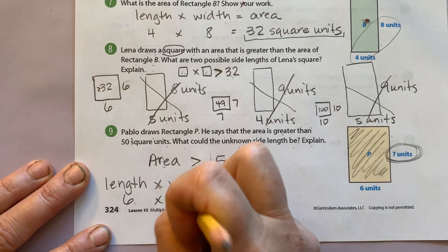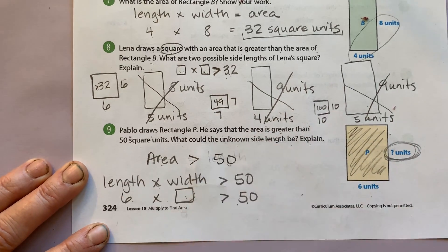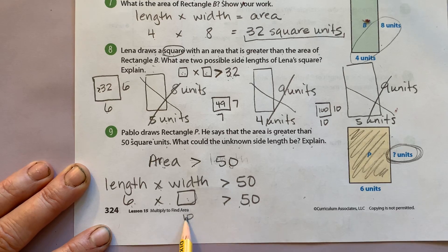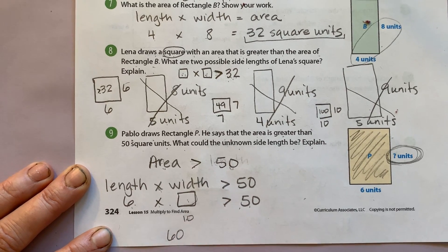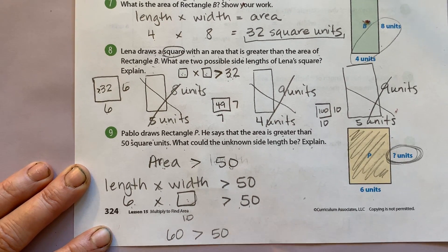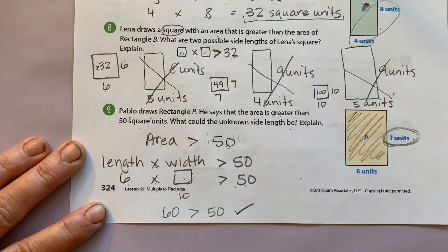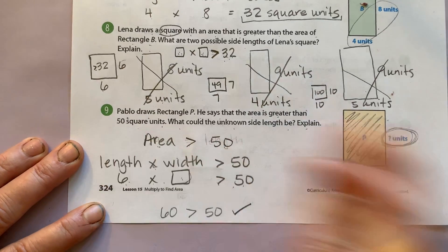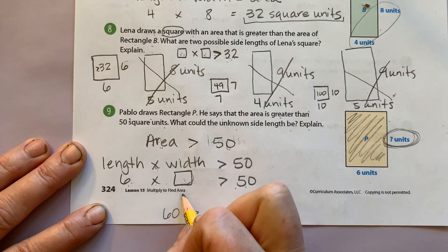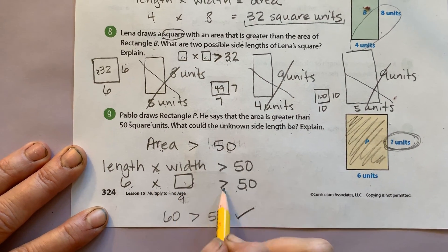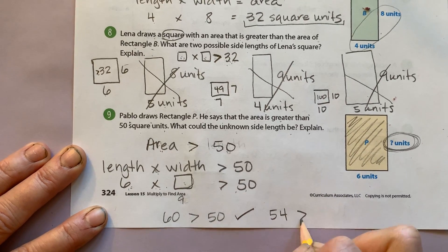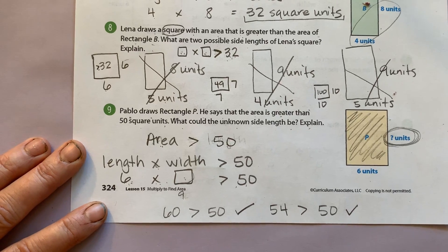What if I put in 10? Six times 10 is 60. Is 60 greater than 50? You're right. It is. What's another number that will work? Did anyone try nine? Six times nine is 54. 54 is greater than 50. That works. Nice job.